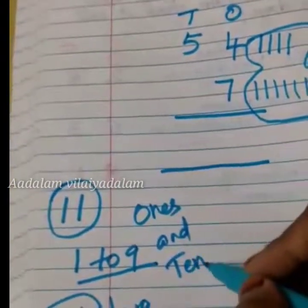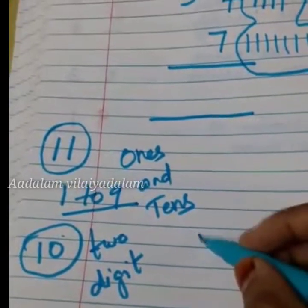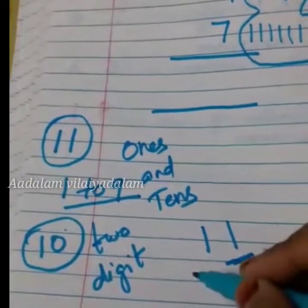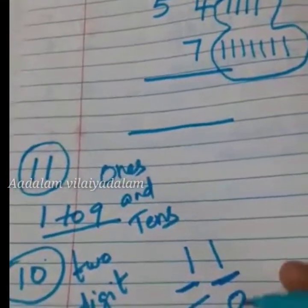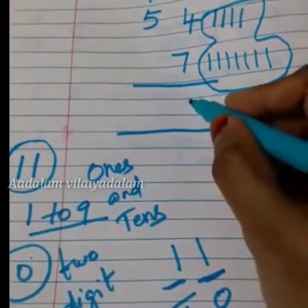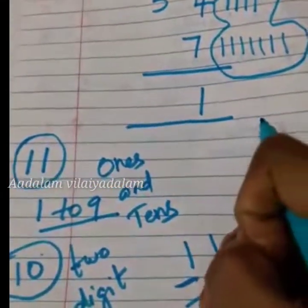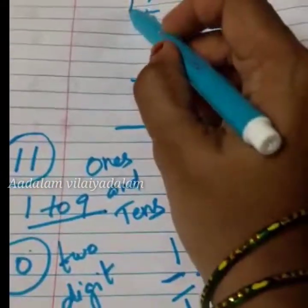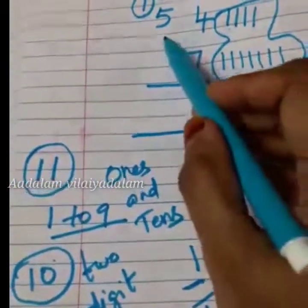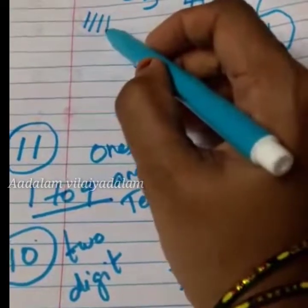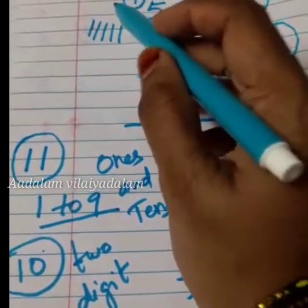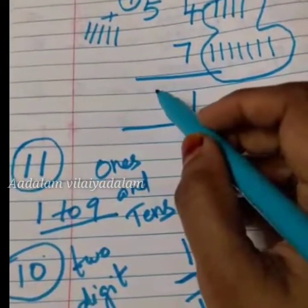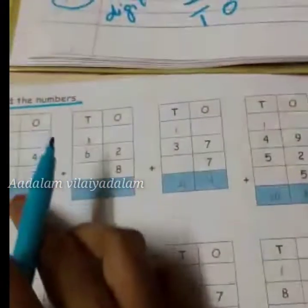In a two-digit number, there are always ones and tens. For example, see eleven: this place is ones place, this is tens place. So in the ones place, the ones digit is one — you put one here. The tens digit is one, and you carry it over to the tens place. Now here it is five: one, two, three, four, five. There is no other number below it, so five plus one carry is six. So totally the answer is sixty-one.